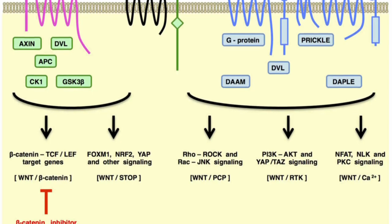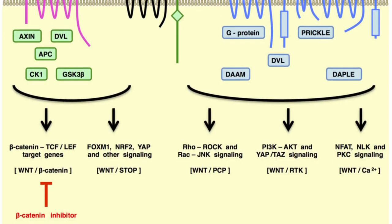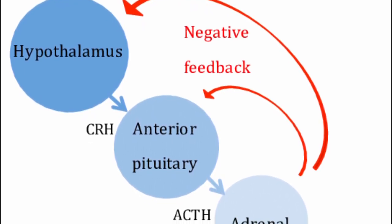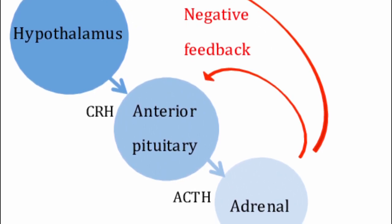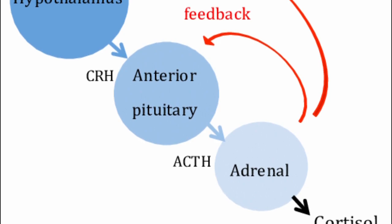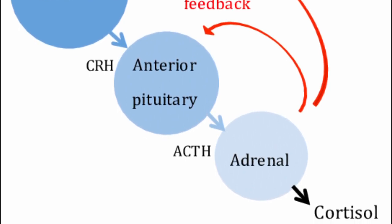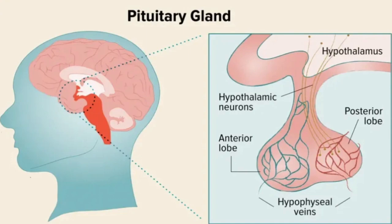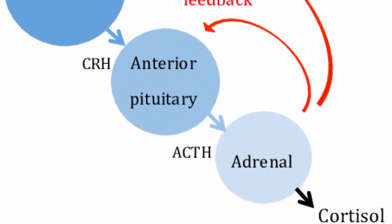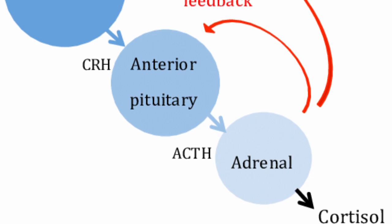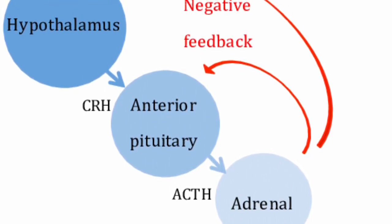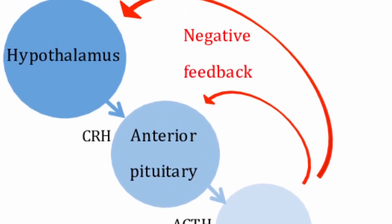The WNT pathway is critically important during embryonic development, regulating processes like axis formation, tissue differentiation, and organogenesis. Axes are basically a way of describing signaling pathways. For example, the HPA axis: the hypothalamus releases corticotropin-releasing hormone, which travels to the anterior pituitary gland at the base of the skull. The anterior pituitary then releases adrenocorticotropic hormone, which travels to the adrenal cortex, located in the adrenal glands atop the kidneys. These release cortisol, which provides negative feedback on both adrenocorticotropic hormone and corticotropin-releasing hormone production — thus, the HPA axis regulates homeostasis.